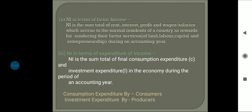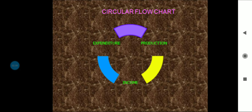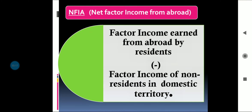This is the circular flow chart we have discussed so far. Production leads to income, income leads to expenditure, and expenditure further creates demand for production. This is nothing but the circular flow of income. Now we arrive at NFIA — net factor income from abroad.